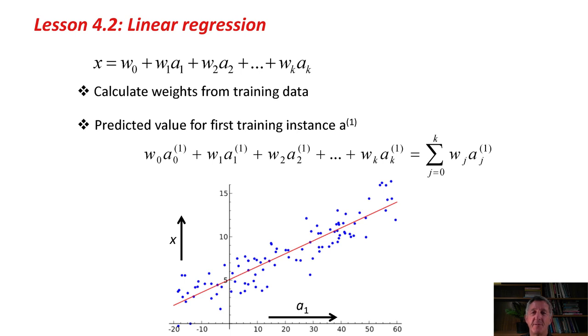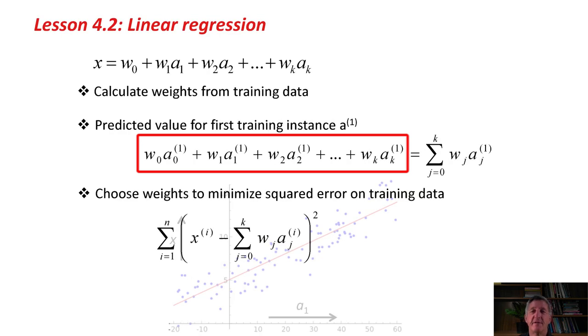We're going to calculate these weights from the training data. w0, w1, and w2. Those are what we're going to calculate from the training data. Once we've calculated the weights, we're going to predict the value for the first training instance, a1. The notation gets really horrendous here. I know it looks pretty scary, but it's pretty simple. We're using this linear sum, with these weights that we've calculated, using the attribute values of the first test instance here, in order to get the predicted value for that. We're going to get predicted values for the training instances using this rather horrendous-looking formula here.